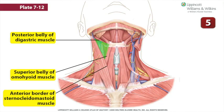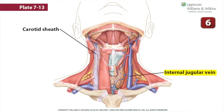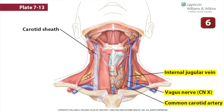The carotid triangle has the longest list of structures. It is bounded by the posterior belly of the digastric, the anterior border of the sternocleidomastoid, and the superior belly of the omohyoid. Running through the carotid triangle is the carotid sheath, a fascial tube composed of contributions from all three layers of deep fascia: investing, prevertebral, and pretracheal. Within the sheath is the internal jugular vein, the vagus nerve, and the common carotid artery with its bifurcation into the internal and external carotid arteries.